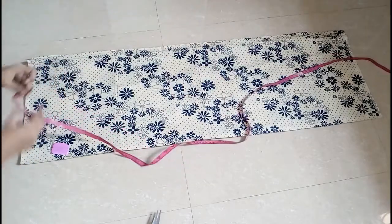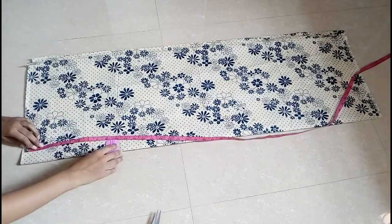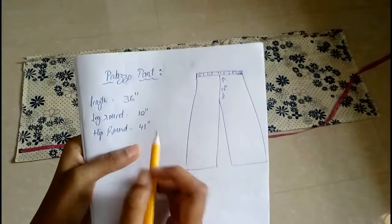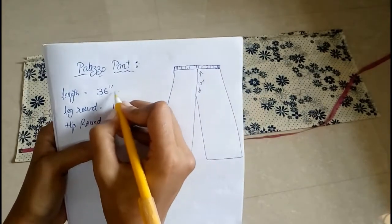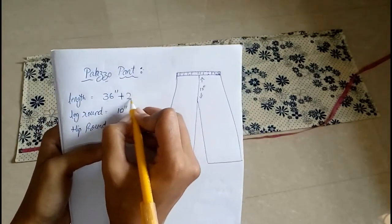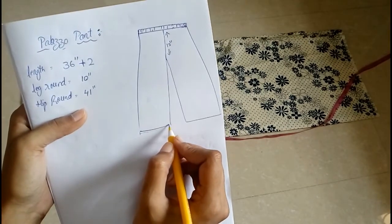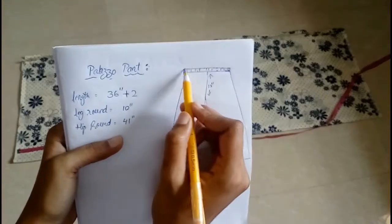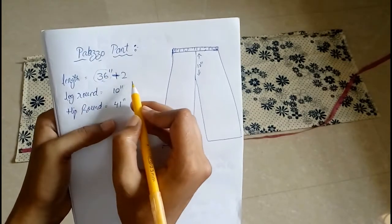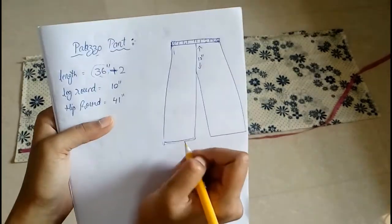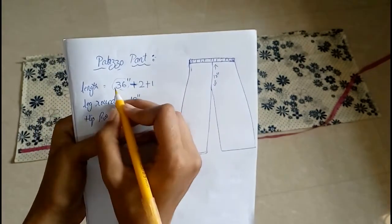We need a measuring tape and a marker. First I will be marking the length. The length I need is 36 inches plus two because we need to add a seam allowance over here and also over here. Our measurement is 36 plus two inches for the waistband. We also need to fold the bottom, so we have to add the seam allowance over here. One more inch, that will become 39.